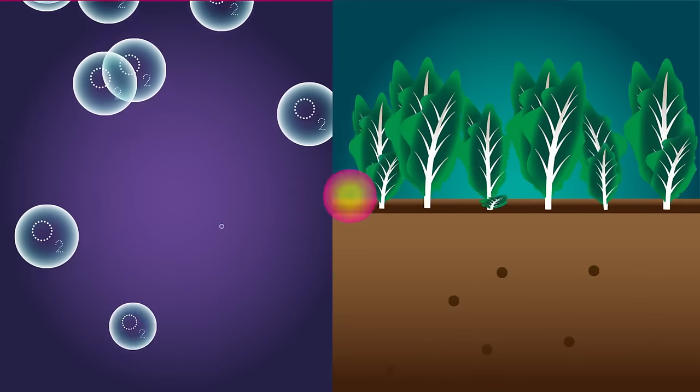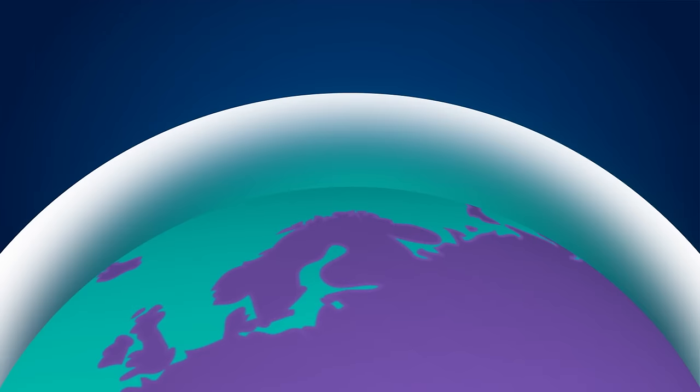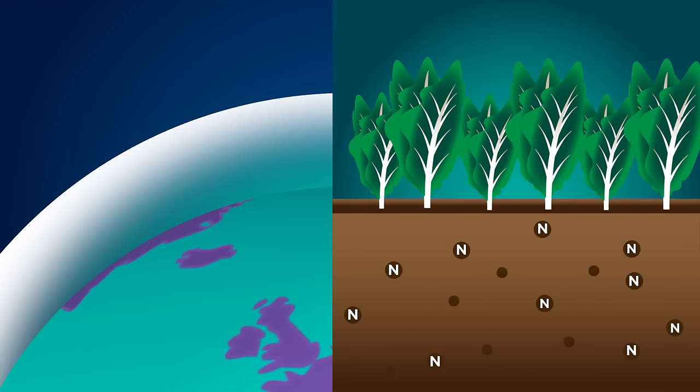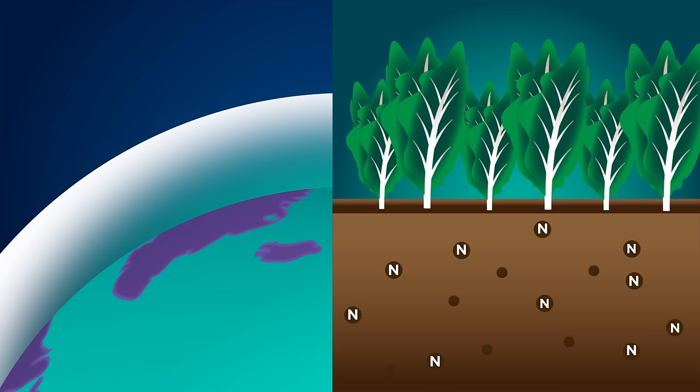Oxygen to breathe, food to eat, thank you microbes. They generate oxygen in the atmosphere and they fix nitrogen in our soils so that plants can grow, forming the base of our food chains.